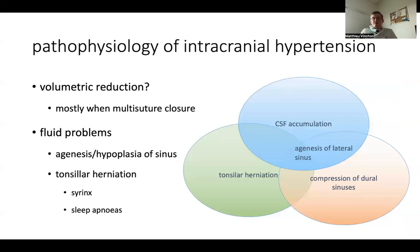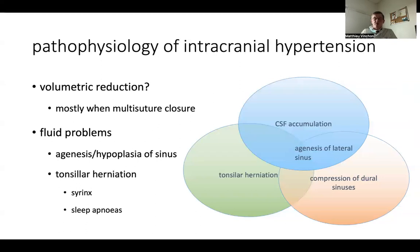You can have intracranial hypertension associated with lambdoid synostosis, because there is a volumetric reduction incompletely compensated by overgrowth in the frontal region. This occurs mostly in bilateral or multisuture synostosis, but it can also be compounded by a CSF problem due to insufficient drainage because of hypoplasia or compression of the sinus. You can have tonsillar herniation, which can be both the result and the cause of intracranial hypertension. It can cause syringomyelia, sleep apnea, and sleep apnea can further aggravate intracranial hypertension due to hypercarbia.